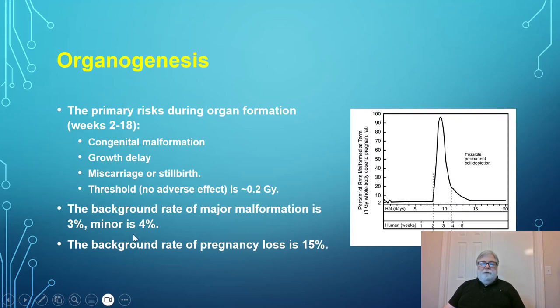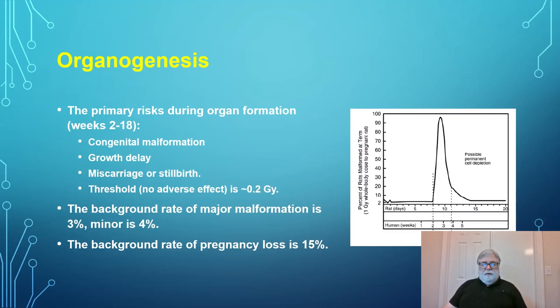The background rate for major malformations in the general population without radiation is about 3%; minor malformations about 4%; and miscarriage or stillbirth about 15%. These are common phenomena even without radiation exposure, though additional cases may occur with radiation dose depending on magnitude.